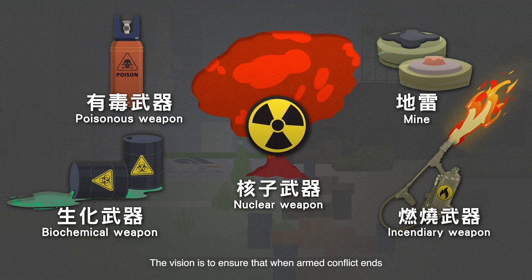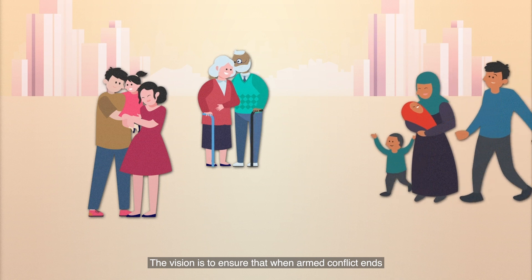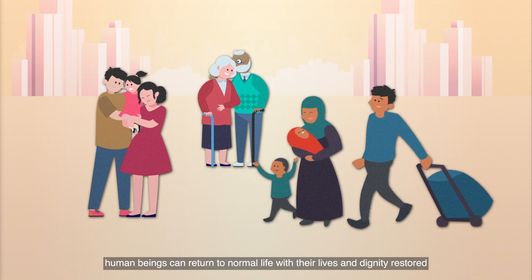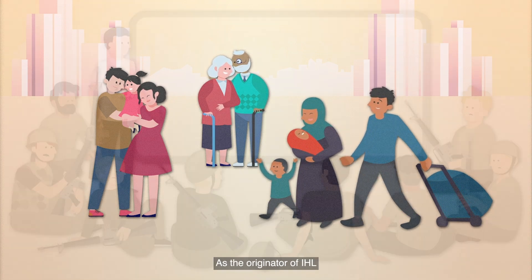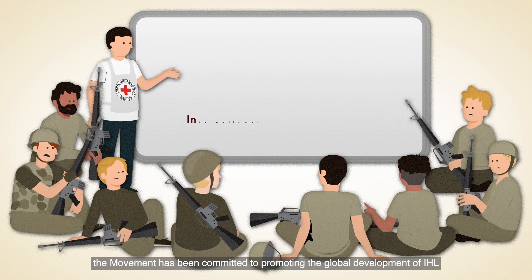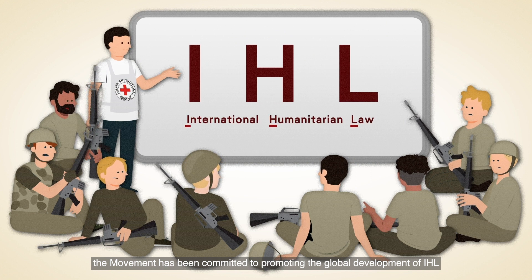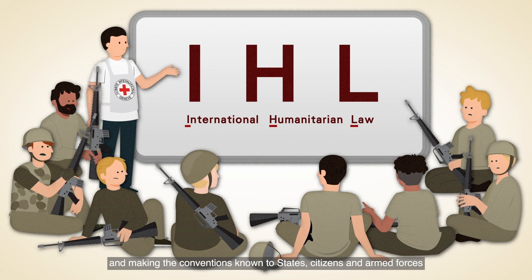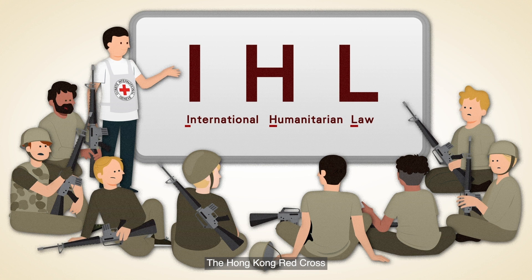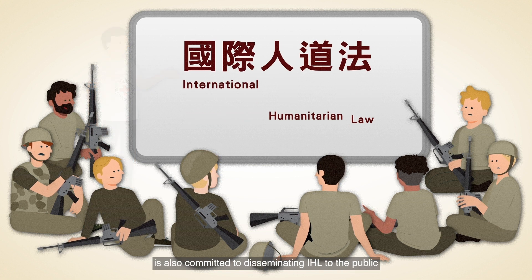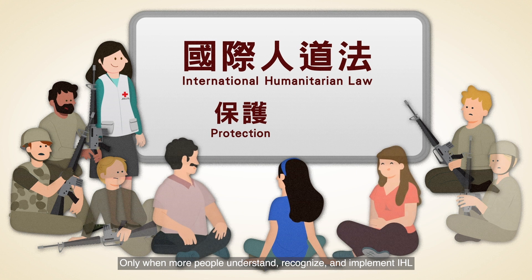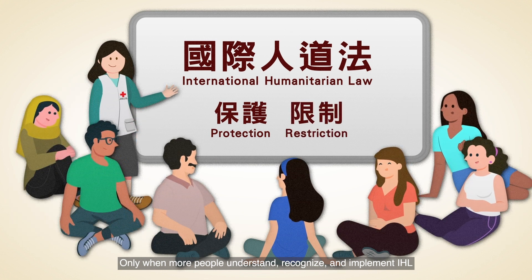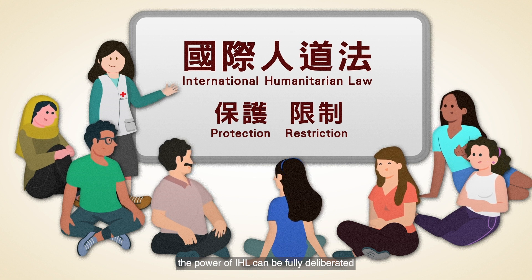The vision is to ensure that when armed conflict ends, human beings can return to normal life with their lives and dignity restored. As the originator of IHL, the movement has been committed to promoting the global development of IHL and making the conventions known to states, citizens, and armed forces. The Hong Kong Red Cross is also committed to disseminating IHL to the public. Only when more people understand, recognize, and implement IHL can the power of IHL fully deliberate.